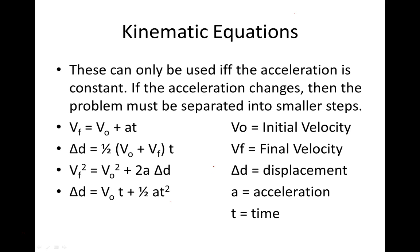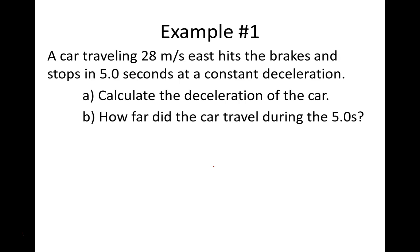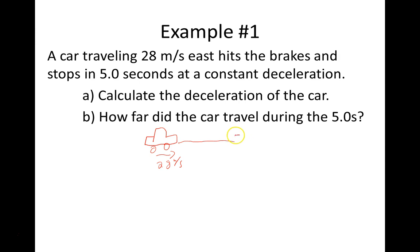Here's the first problem: a car that's traveling hits the brakes and stops. The first step I'd recommend is to sketch out a picture so you can visualize what's happening. We have our car traveling at 28 meters per second — it's going to hit the brakes, slow down, and stop. At that point it's traveling at zero meters per second. It's traveled some distance Δd, and the time we know it took is five seconds.